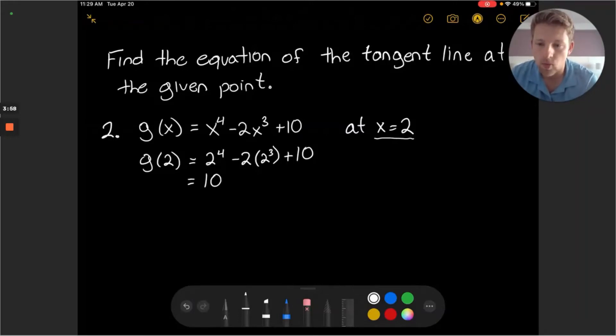So we're working with the point (2, 10). To find the equation of the tangent line we first need to find the tangent line slope.